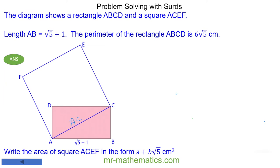So we know the perimeter of the pink rectangle is 6√5, and I'm going to call the length BC x, which means AD is the same, and CD is the same as AB, which is √5 + 1. So the perimeter of the rectangle is 2(√5 + 1) + 2x, and this equals 6√5.